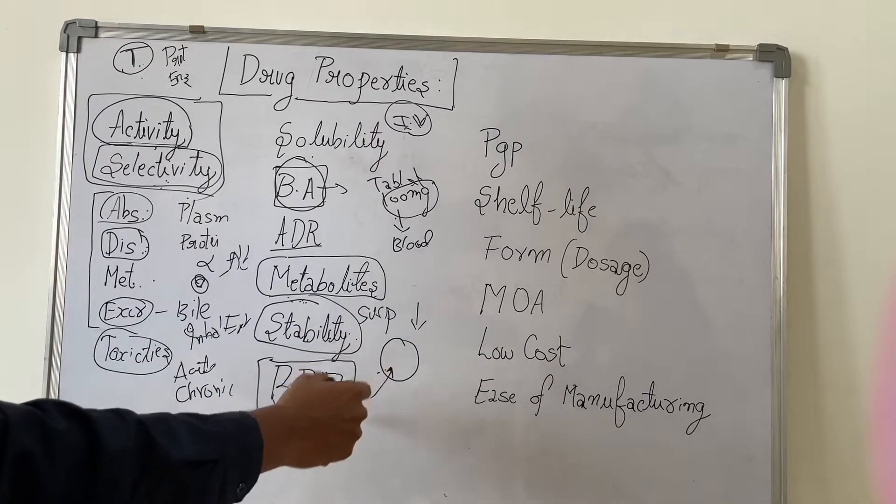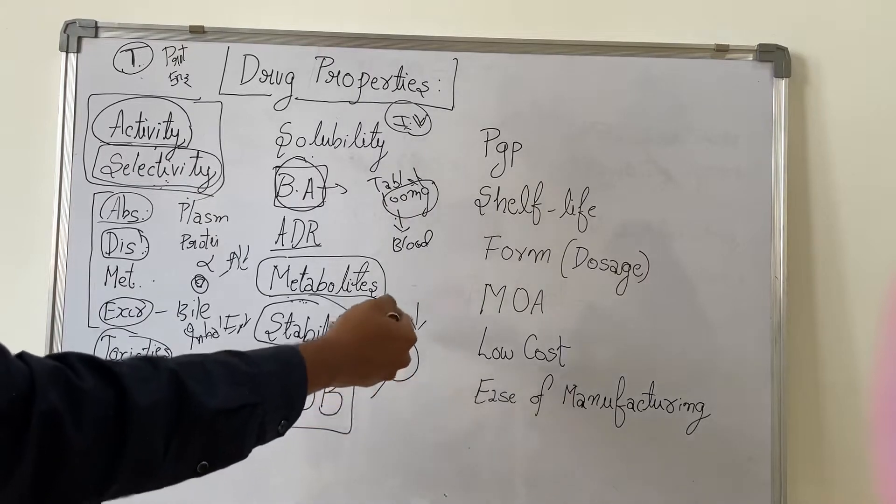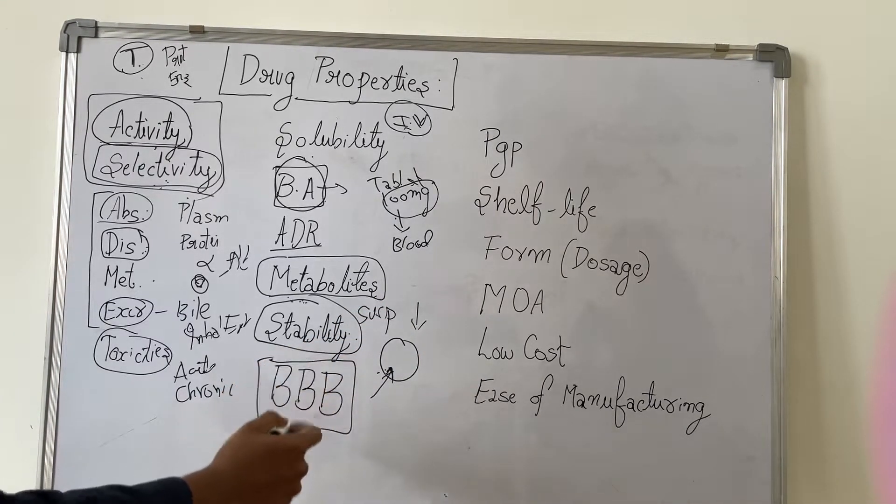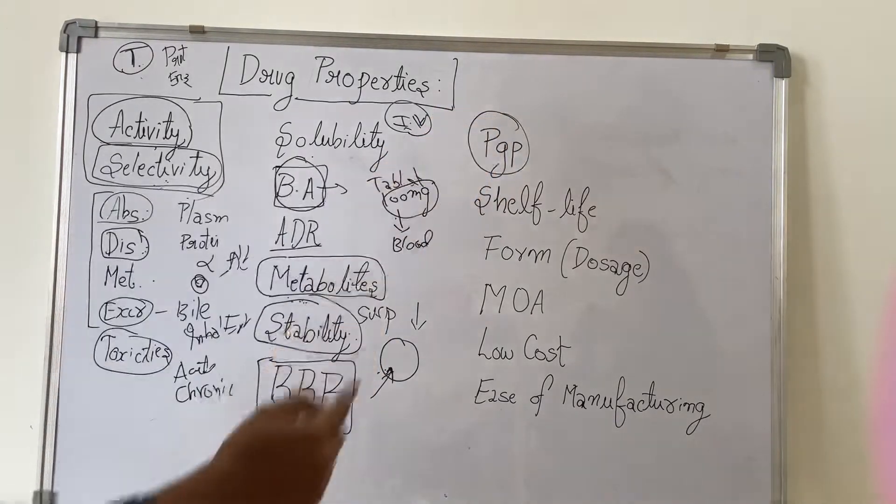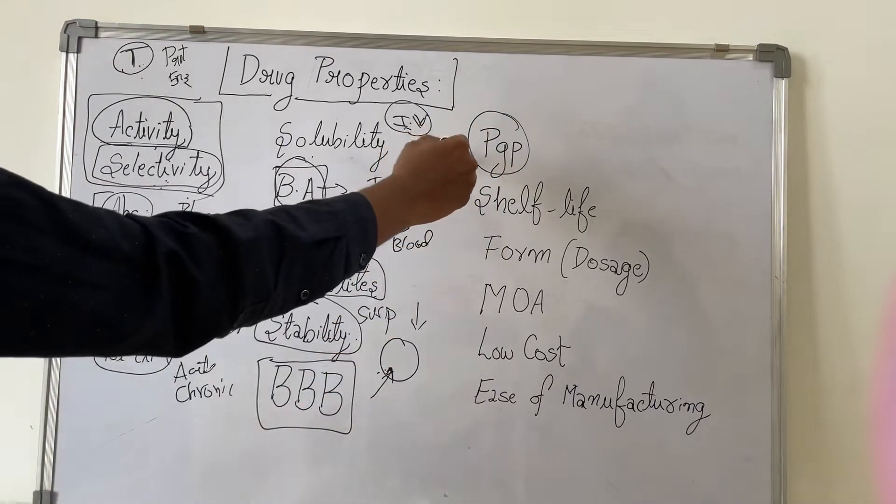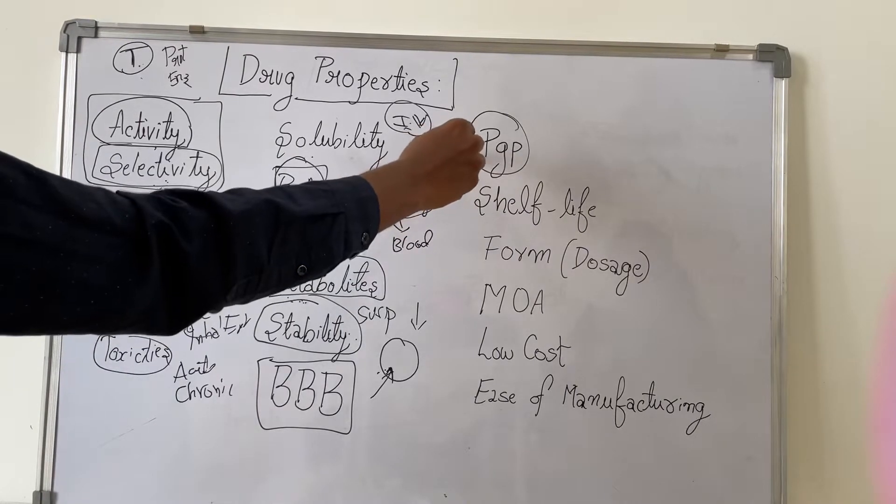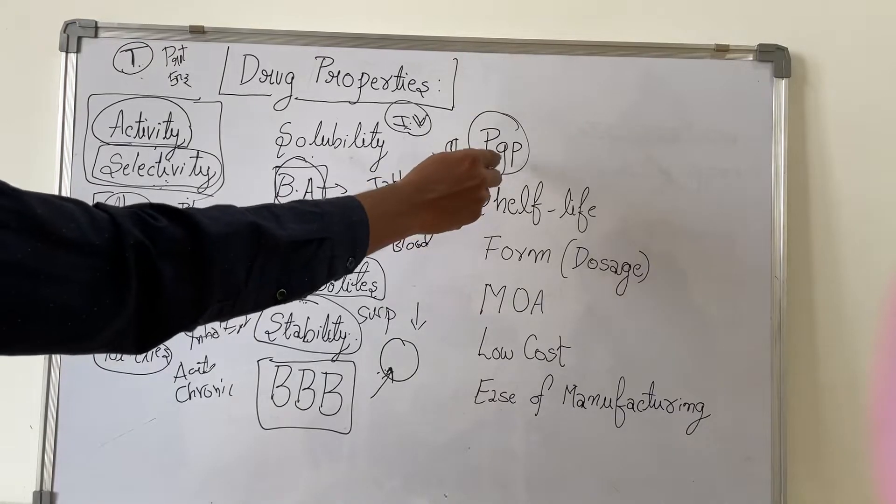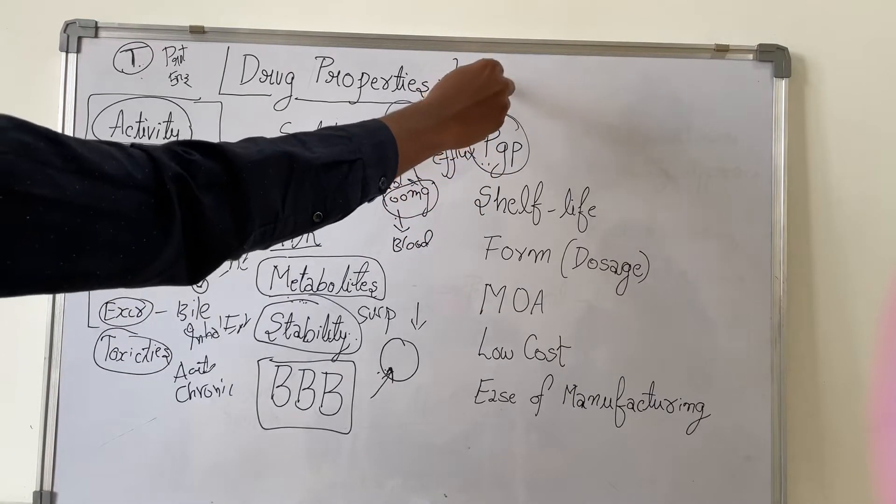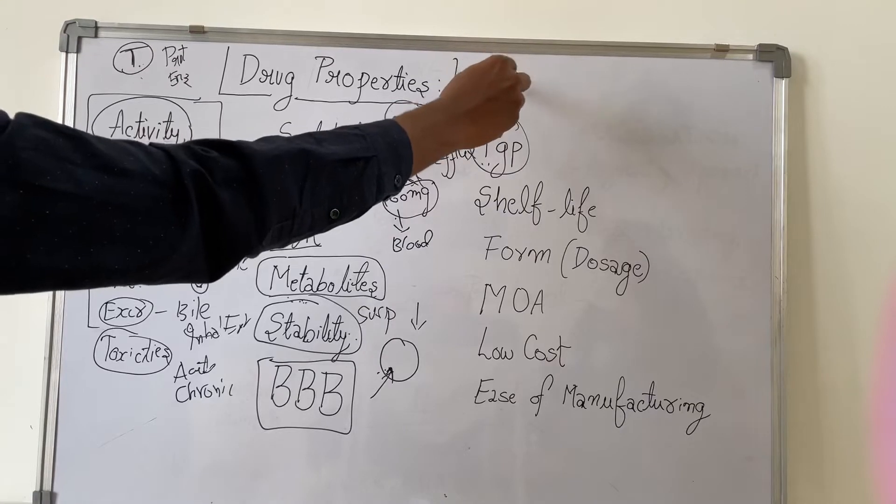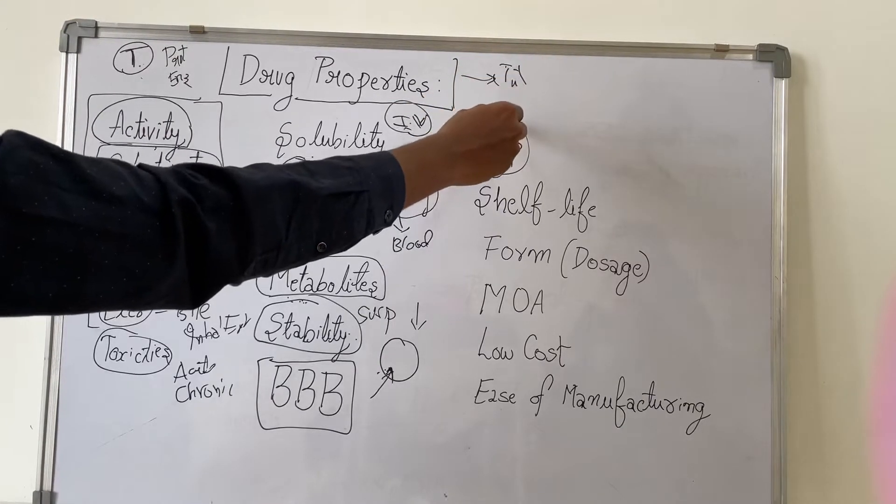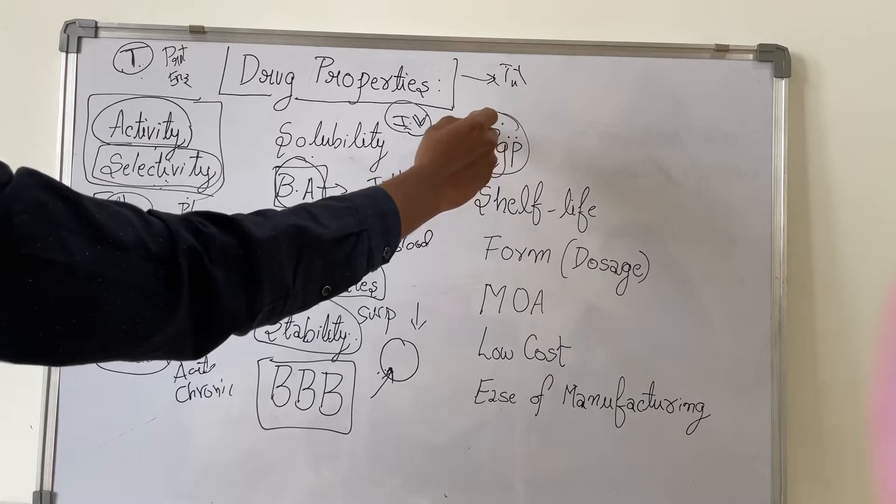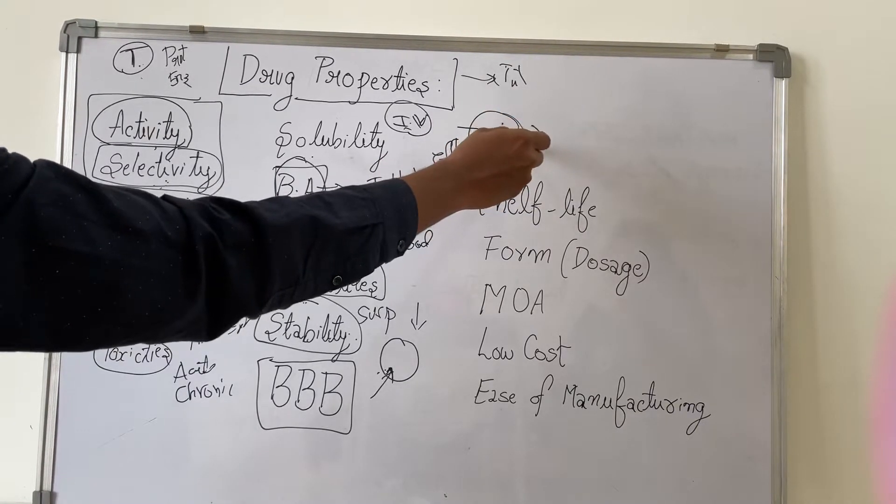Next one is PGP. This PGP is an efflux pump usually present in different locations, even present in our intestine. Some drugs are being eliminated. For example, a drug has been absorbed into our intestine. This PGP will efflux it outside.